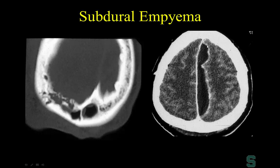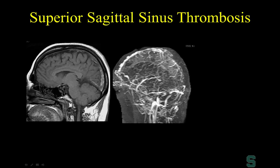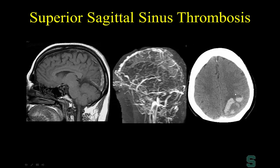With a large subdural empyema, you must examine the superior sagittal sinus running along the falx. T1 shortening indicates superior sagittal sinus thrombosis. An MRV demonstrates absence of flow in the superior sagittal sinus, and on axial images you can identify a large venous infarct involving the posterior aspect of the left cerebral hemisphere — a venous infarct due to superior sagittal sinus thrombosis.